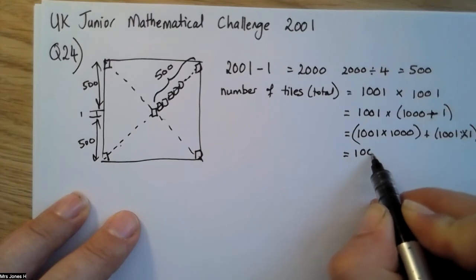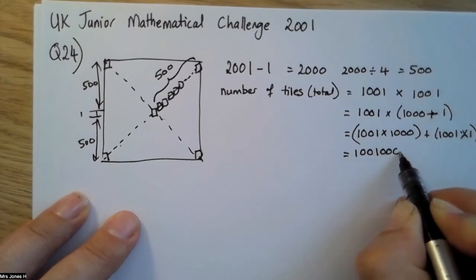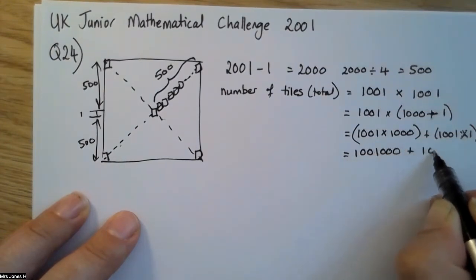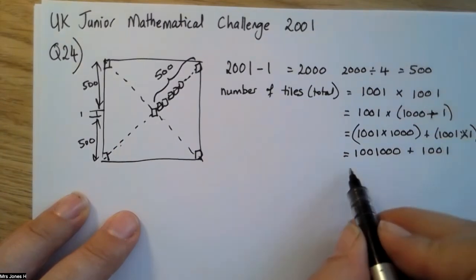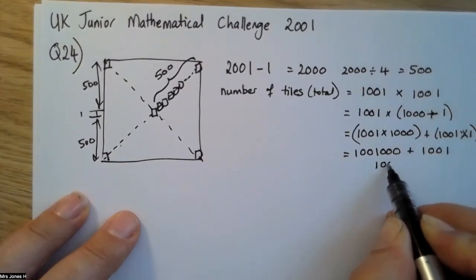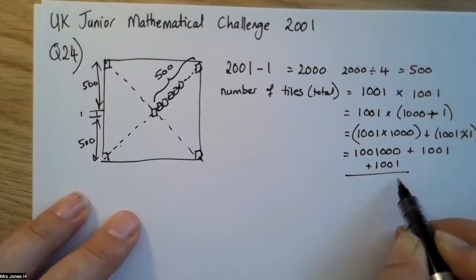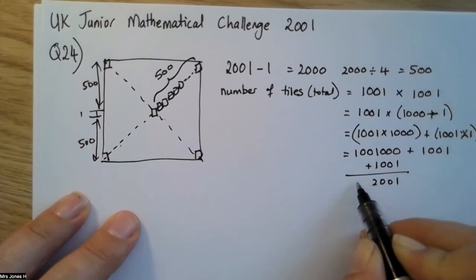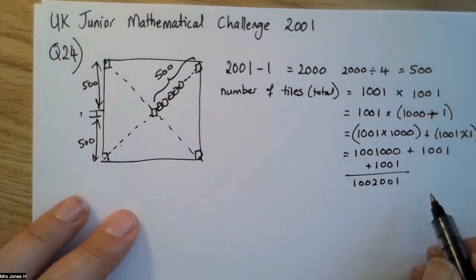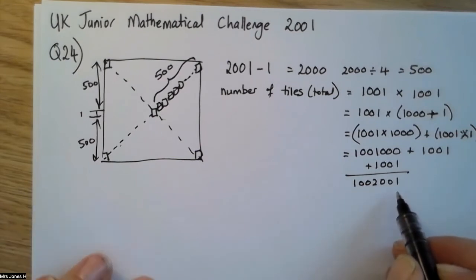This becomes 1,001,000, and this becomes 1,001. If we add those together, we get 1,003,001 - this is the total number of tiles.